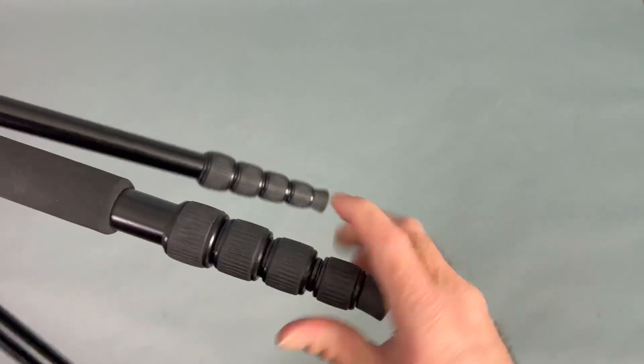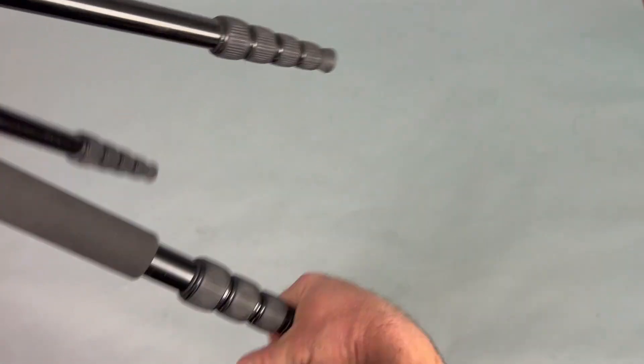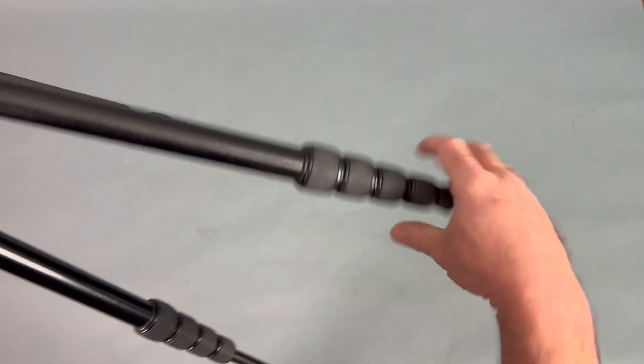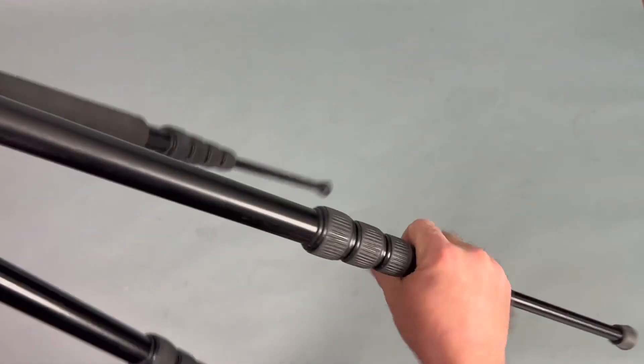You get twist lock legs with a number of adjustments. This tripod goes up to 67 inches, which is plenty tall for anything I'm doing.